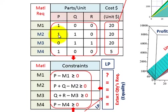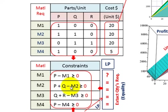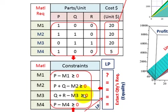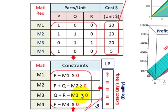For M2, we have 1 part required for P and 1 part required for Q, so the constraint is P plus Q minus M2 ≥ 0 — we need the exact quantities required. For M3, coming off our table we've got 1Q and 1R, so Q plus R minus M3 ≥ 0. All these have to be greater than or equal to 0 because we can't have any less material.